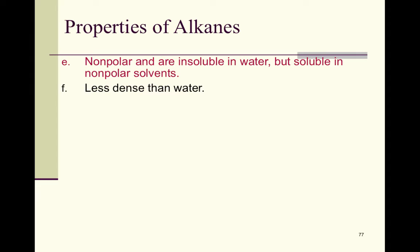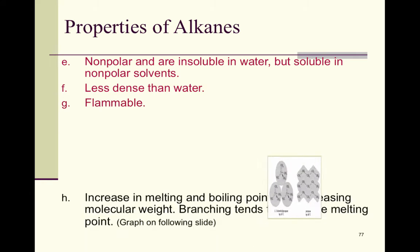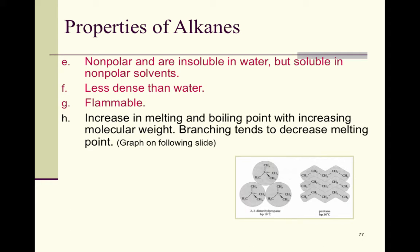Alkanes are less dense than water, they're flammable, and we get an increase in melting and boiling point with increasing molecular weight. Branching tends to decrease melting point. That's the basis of a lot of comparisons of melting and boiling points — if the molecule weighs more than another, it'll have a higher melting and boiling point. Branching tends to decrease melting point.